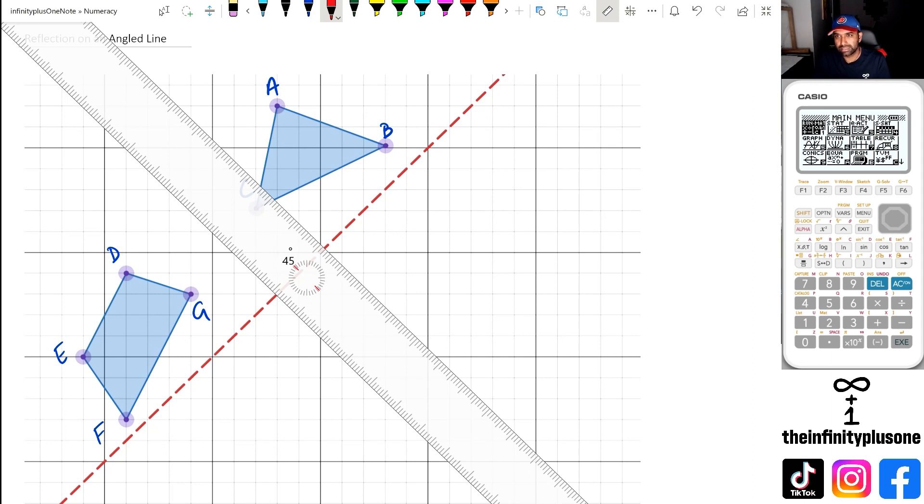Or what I would also recommend is turning your paper so that the red line is now either on the y-axis or it's on the x-axis. Now I'm going to try and show you guys how to do it this way.